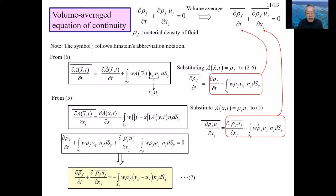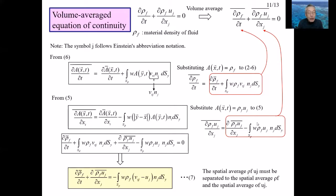Substituting the expressions in both red line frames into the volume average equation gives the equation in the third black line frame. Combining the integral parts gives equation 7 in the yellow frame — the volume average equation of continuity. However, both ρf and uj on the left-hand side are independent unknown variables, so equation 7 is not yet a form that can be used for numerical calculation; the volume average ρf·uj must be separated.